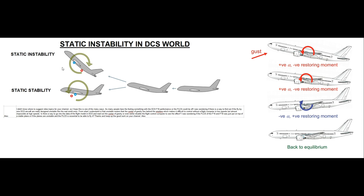That means the center of lift shown in blue, and in this case the center of gravity shown in red, is way behind the center of lift. Down here we have a statically stable aircraft where the center of gravity, which is red, is in front of the center of lift, which is blue.